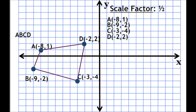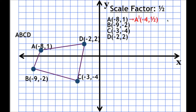Now this time we have a scale factor of one half. So what do you think — is our dilated shape going to be bigger or smaller? It's going to be smaller because the scale factor is less than 1. Remember, any time you multiply by a number less than 1, you're going to get a smaller answer. Let's start by dilating point A. We multiply both our x-coordinate and our y-coordinate by one half. So we multiply negative 8 by one half and 1 by one half. A prime is going to be negative 4, one half.